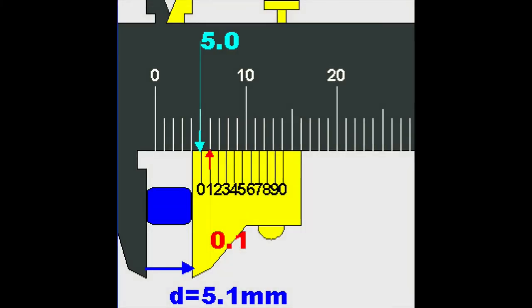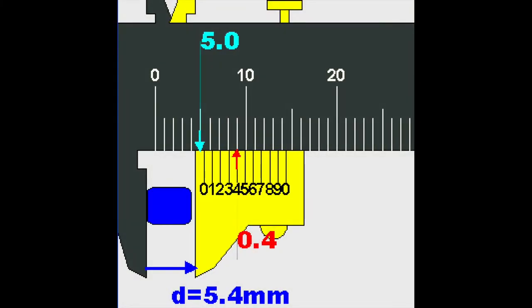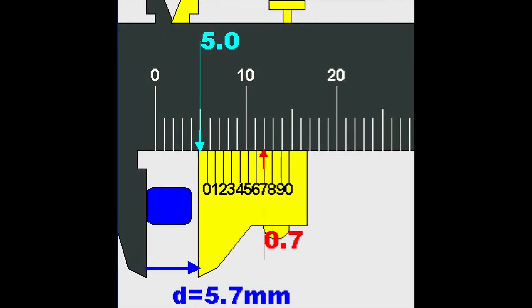The measurement is taken as the point where a graduation mark from the vernier scale and a graduation mark from the main scale best align.